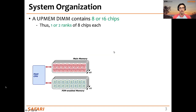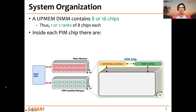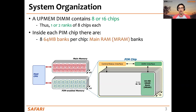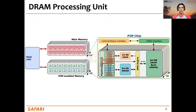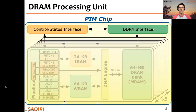Remember that the system organization consists of a host CPU connected to some DRAM DIMMs that behave as the main memory of the system, and some PIM-enabled DIMMs from UPMEM. Each of these DIMMs contains eight or 16 chips, and inside each PIM chip there are eight DRAM banks. Connected to each of the DRAM banks, we have a DRAM processing unit or DPU. Internally, inside each PIM chip, there is a DDR4 interface for the host to access data in DRAM banks, and a control and status interface for the host to communicate with the pipeline of the DPU.